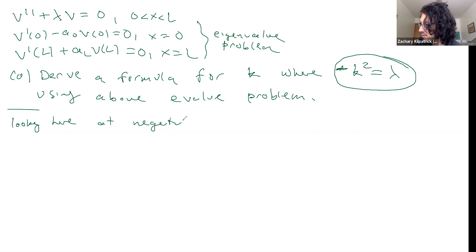Okay, lambda less than zero, and we may be interested in if there are any decaying components of our eigenfunctions, and we might be interested in how many eigenfunctions we have associated with the decaying components of our solution.